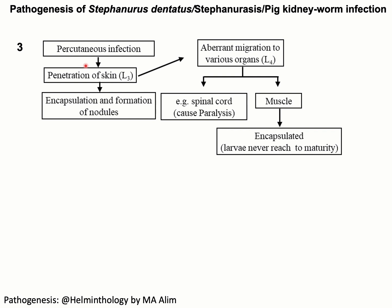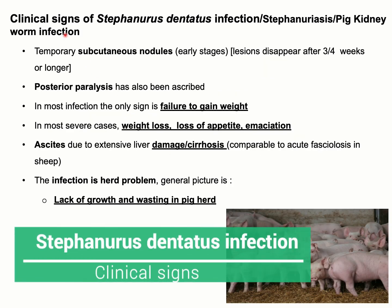Regarding the percutaneous route of infection: L3 stages can penetrate the host skin, resulting in formation of nodules due to immune reaction. These L3 stages can migrate to different organs — if they reach the spinal cord they may cause paralysis of the host. They may also migrate to muscle where they become entrapped, triggering an immune reaction followed by death of the larva. These larvae will never reach maturity.